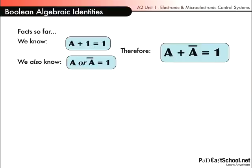If A were a 1, then A bar would be a 0. But still, 1 ORed with a 0 gives us a 1. So this identity is quite important.